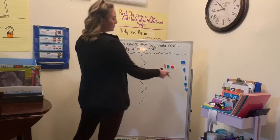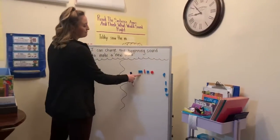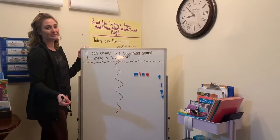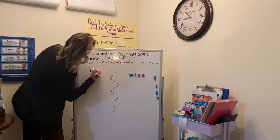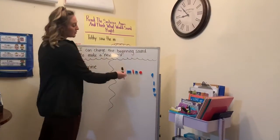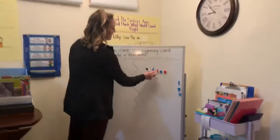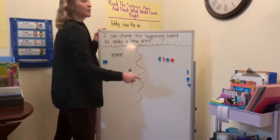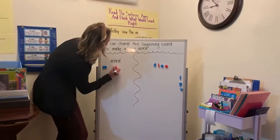So if we take our M and we put it at the beginning of I-N, we have M-I-N. What is that word? Mine. Now if I take away the M and I replace it with an F, I have F-I-N. What word is that? Fine.